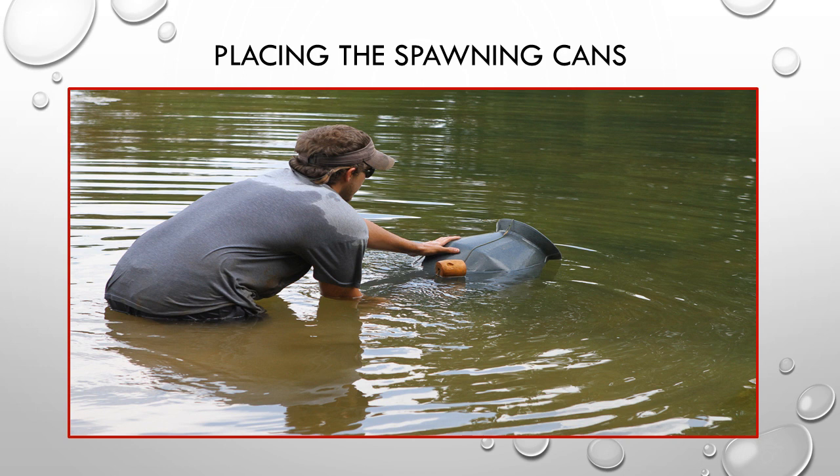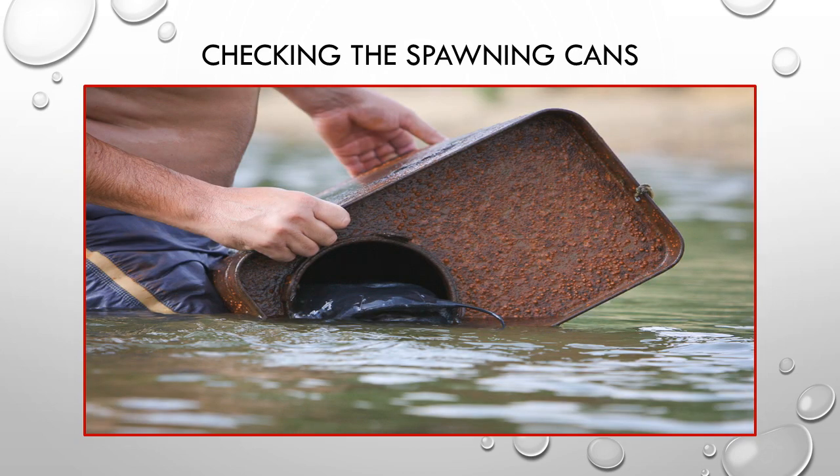Catfish like to spawn in sheltered locations, so catfish farmers will put out spawning containers in two to four feet of water. The male catfish will clean and prepare the can for spawning and then try to attract a female. After several days the farmer will check the spawning cans by slowly raising them out of the water, and will often find the male fish still in the can caring for the eggs. That's why it's always a good idea to look in the can before putting your hand in to check for eggs.